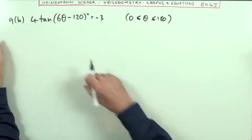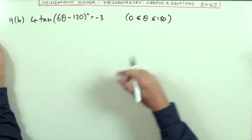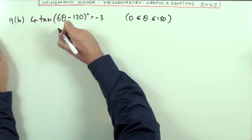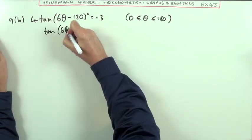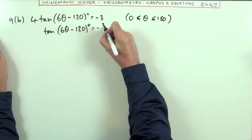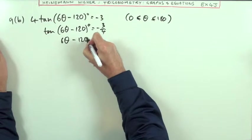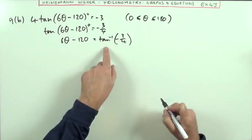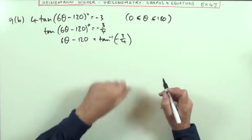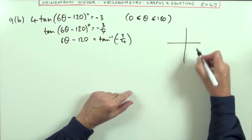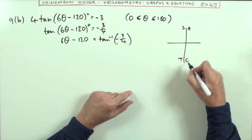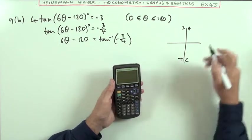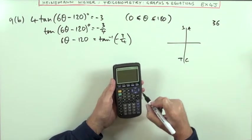For part b, with tangent I have to watch the general solution because tangents repeat every 180 degrees. The tangent of 6θ minus 120 equals negative three quarters, so 6θ minus 120 is the inverse tan of negative three quarters. When finding values, don't use the negative—let the CAST diagram take care of that. Get the acute value from three quarters.